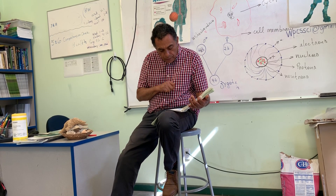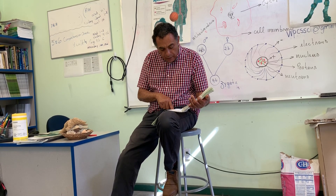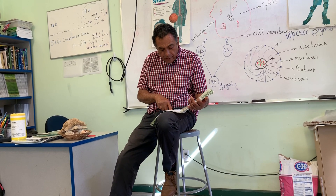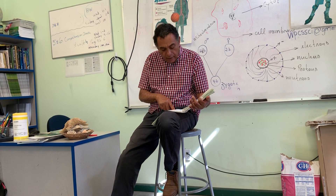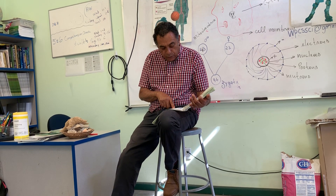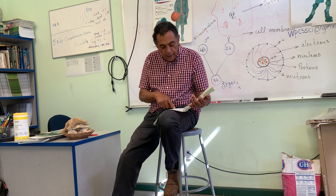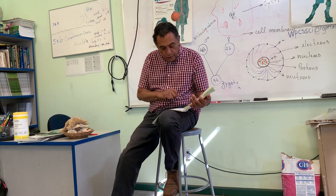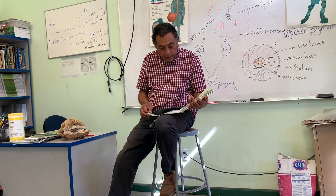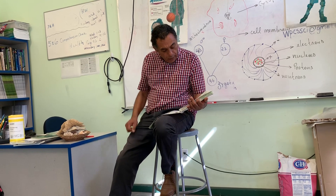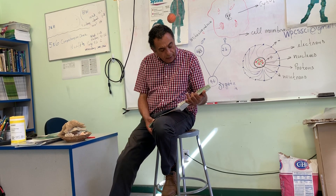For gallium, atomic number 31: the first shell has 2 electrons, the second shell has 8, the third shell has 18, and the fourth shell has 3. So atomic number 31 equals the total number of electrons distributed across the shells.